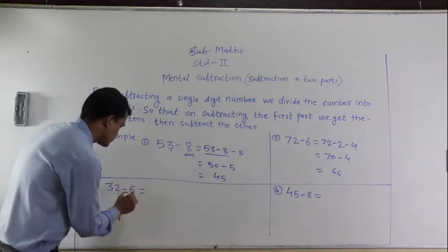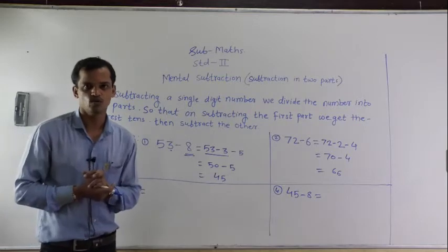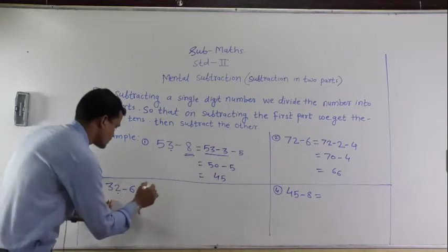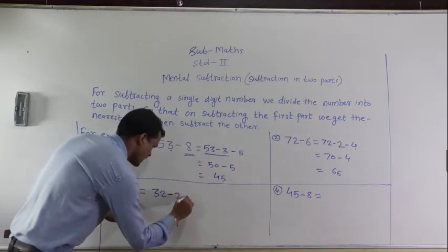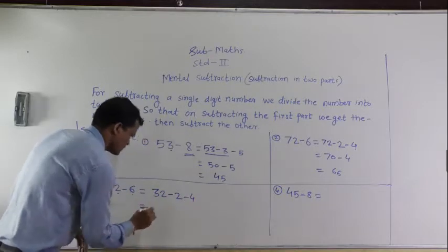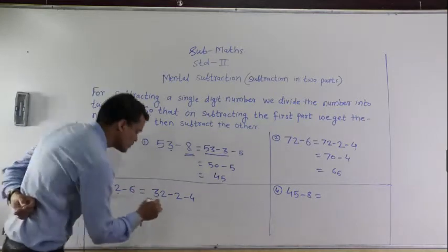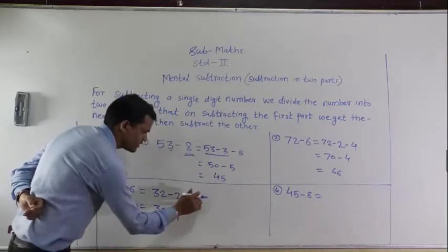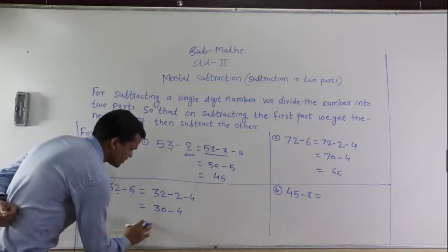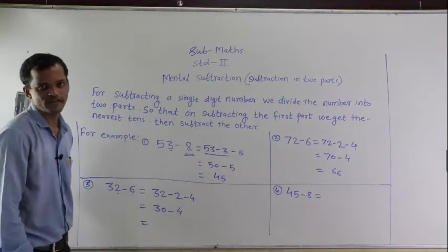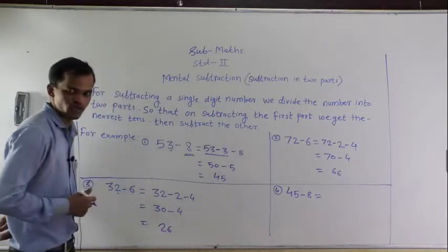Divide 6 like this: 2 plus 4. Write it as 32 minus 2 minus 4. Subtract 32 minus 2 equals 30, then subtract 4. 30 minus 4 equals 26 — we can tell that orally.